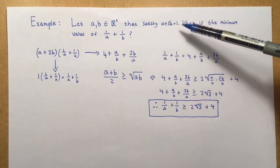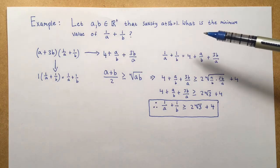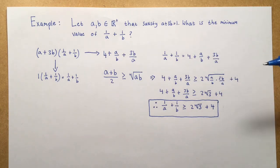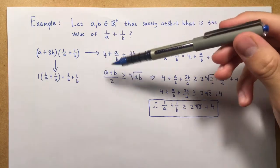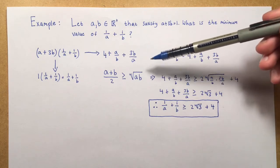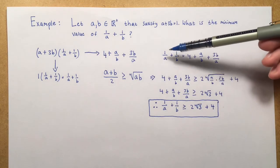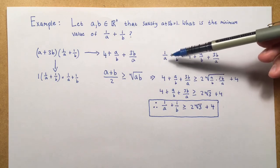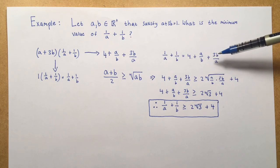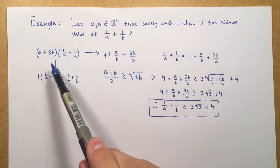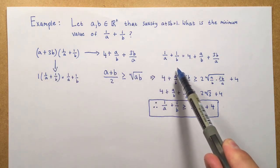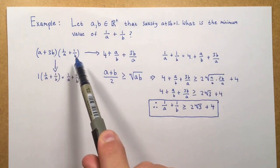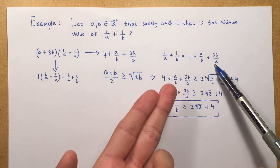Now you might think, hang on, a plus 3b is equal to 1. So surely 1 times 1 over a plus 1 over b is just going to equal 1 over a plus 1 over b since anything times 1 is itself. And you would be totally correct. However, for the purpose of this, let's just see what would happen if we distribute this. So we would get 4 plus a over b plus 3b over a if we could simplify it all. And we can see then, we can set up this equality such that 1 over a plus 1 over b is equal to 4 plus a over b plus 3b over a. Because a plus 3b is equal to 1. So essentially, we're just rewriting 1 over a plus 1 over b as that, seeing as it's essentially been multiplied by 1. So these two are basically two different ways of saying the same thing.